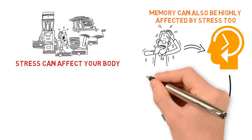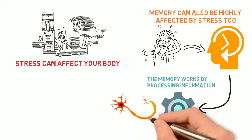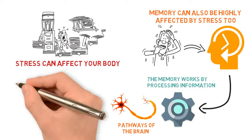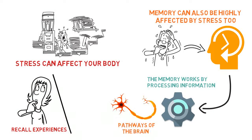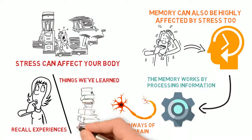The memory works by processing information we acquire through the pathways of the brain. We can retain and recall experiences and things we've learned in the past through the neural pathways.